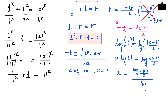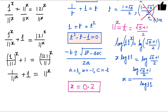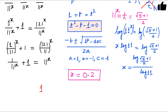This is the answer for this problem. If you want, you can calculate this value using a calculator or log table. The value comes out to x equals approximately 0.2, which is the solution. For practice, try this similar problem: 1 raised to the power x plus 20 raised to the power x equals 400 raised to the power x — find the value of x. Discuss your answer in the comment box.